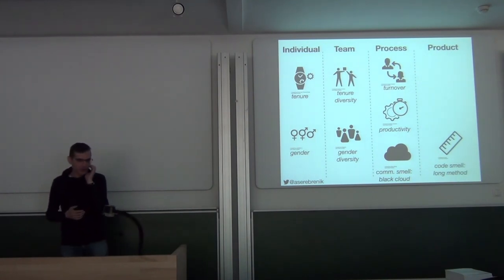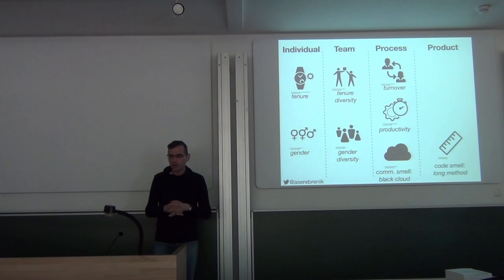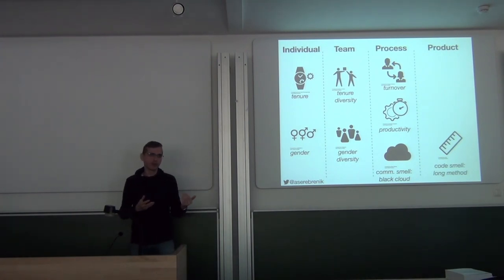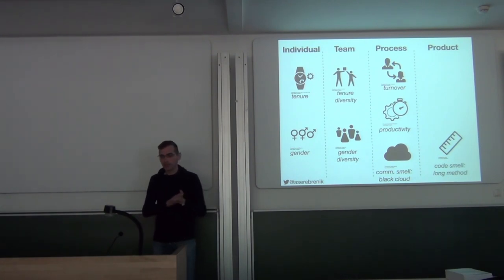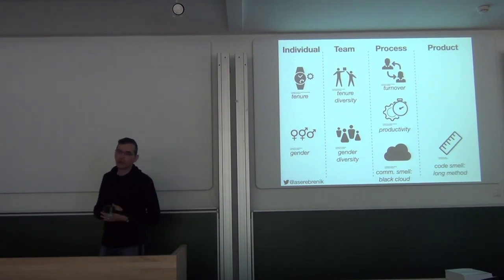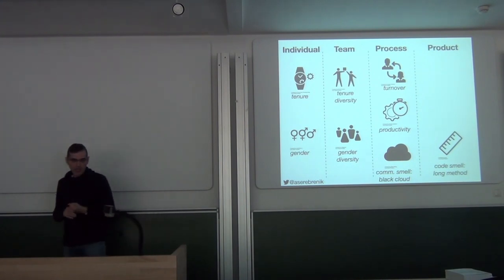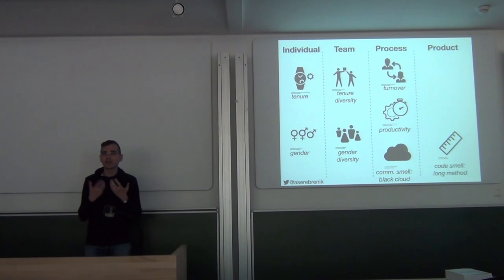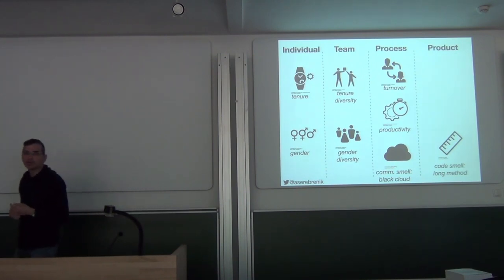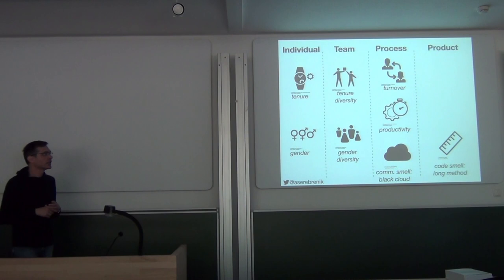So when we are talking about social aspects, about diversity, we usually work on four different levels of variables. We talk about individual aspects—today I am going to talk about gender. I have currently a student who is looking at age. There is quite some work on cultural aspects. We also look at tenure, which should be understood as the amount of time a contributor is involved in a project. Then we can move to team level variables, and those variables are typical diversity variables like tenure diversity, gender diversity, cultural diversity, and so on.